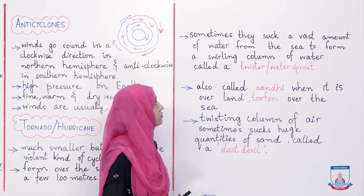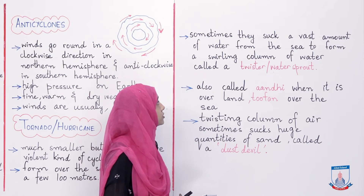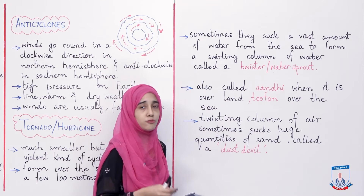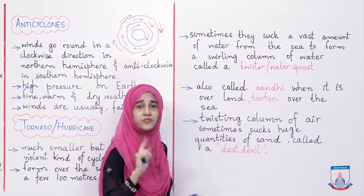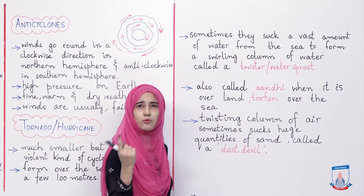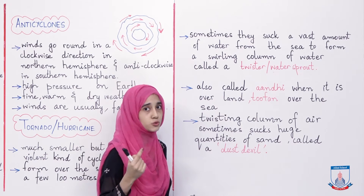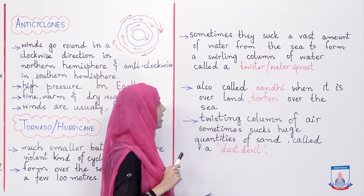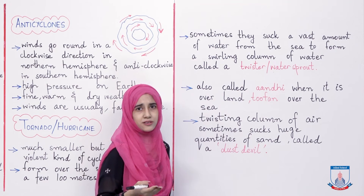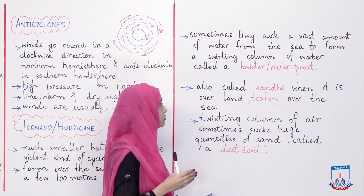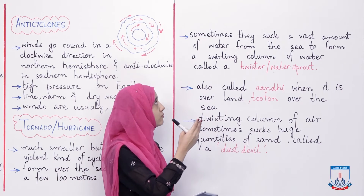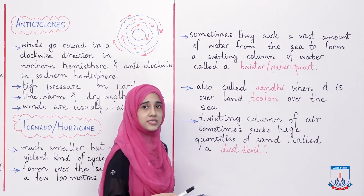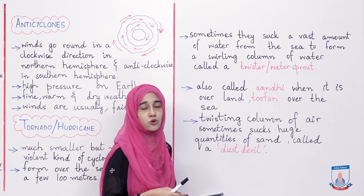Sometimes they suck a vast amount of water from the sea to form a swirling column of water called a twister or water spout. They move in a swirling direction — yaani ki tezi mein ek circle mein move kerte hain. When it is over land it is called aandhi, and tufaan when over the sea — aandhi aur tufaan Urdu words hain jo aapne aksar sune honge.